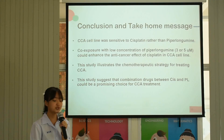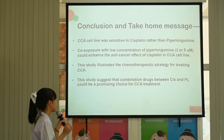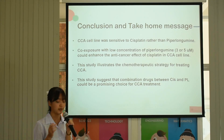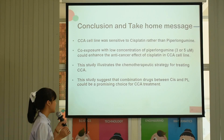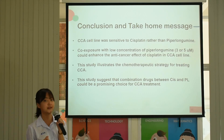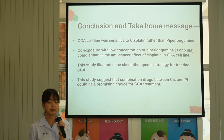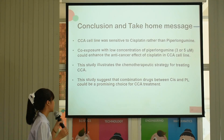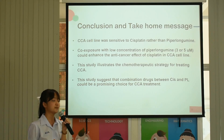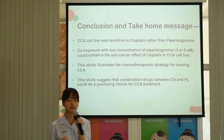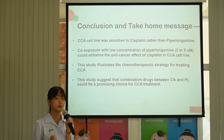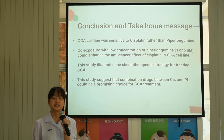In conclusion, CCA cells were more sensitive to Cisplatin than to Piperlongumine. Co-treatment with low concentrations of Piperlongumine at 3 or 5 µM could enhance the anti-cancer effects of Cisplatin in CCA cells. This study illustrates a promising strategy for treating CCA. This study suggests that the combination of Cisplatin and Piperlongumine could be a promising treatment choice for CCA.